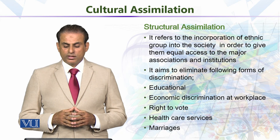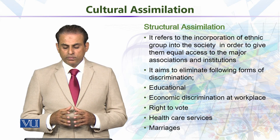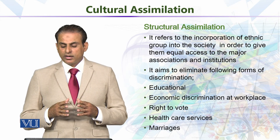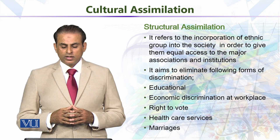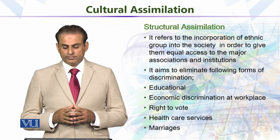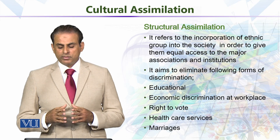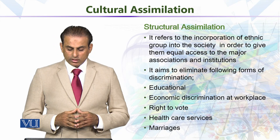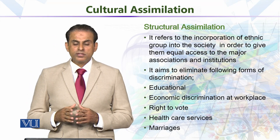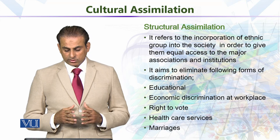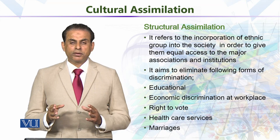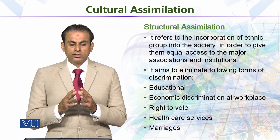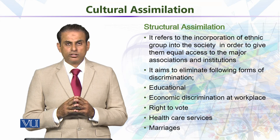Structural assimilation refers to the incorporation of ethnic groups into society in order to give them equal access to major associations and institutions. It aims to eliminate the following forms of discrimination: regarding education, economic discrimination at the workplace, the right to vote, health care services, and marriages. However, all these attributes are adopted through certain conditions — it is not a free fall.